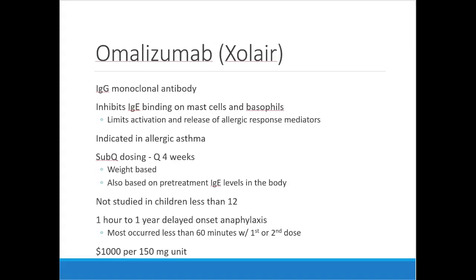Omalizumab (Xolair) is a monoclonal antibody that inhibits IgE binding of mast cells and basophils. It's specifically designed to limit the inflammatory response that leads to asthmatic symptoms from allergic responses. For people with really bad allergy-induced asthma this can be an excellent option. It's subcutaneous dosed once every four weeks, weight-based. A concern is delayed-onset anaphylaxis — patients should be monitored for about an hour especially with the first or second dose. It's expensive but can be highly effective, potentially eliminating regular inhaler use.